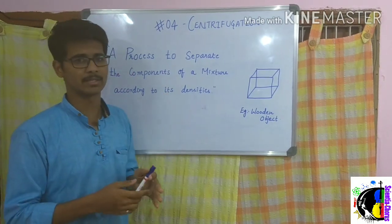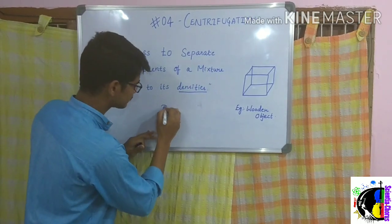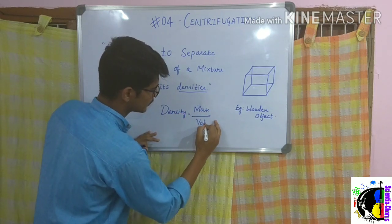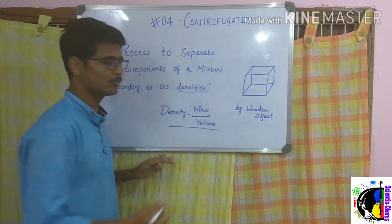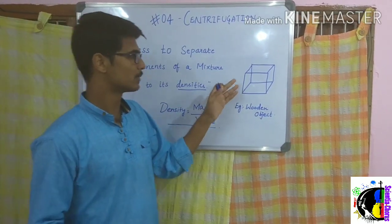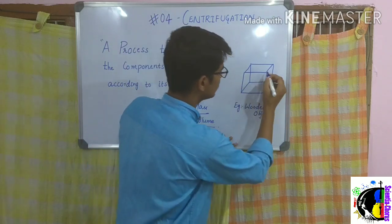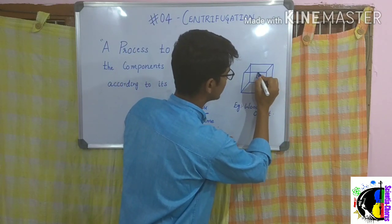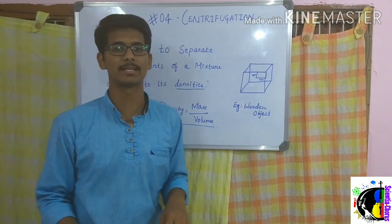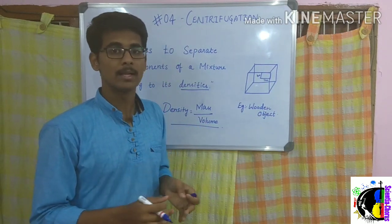In this definition, what does the word density mean? Density is nothing but mass per unit volume. To understand this formula, let us take an example — a wooden object. From this wooden object we take a unit volume: a region that is one centimeter in length, one centimeter in breadth, and one centimeter — that is a particular unit volume.